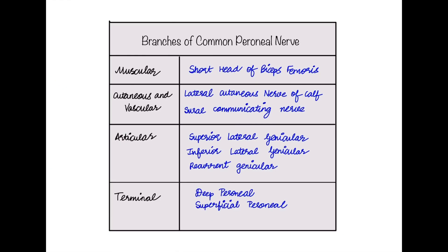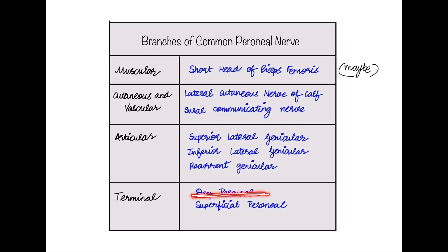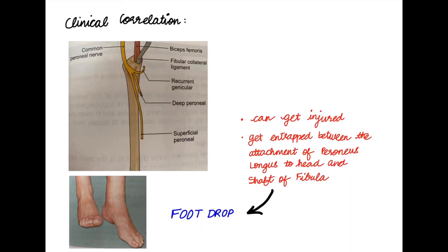This table shows the branches of the common peroneal nerve. The only muscular branch it supplies is the short head of biceps femoris, though it may or may not supply it. The terminal branches are the deep peroneal nerve and the superficial peroneal nerve.